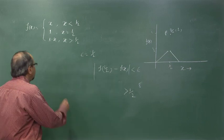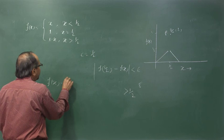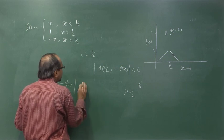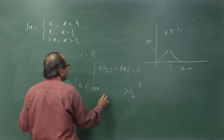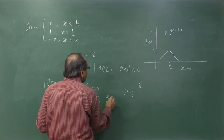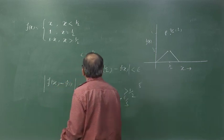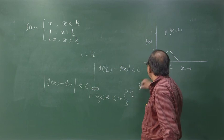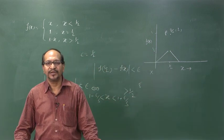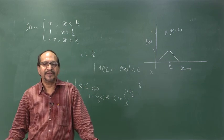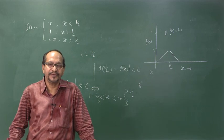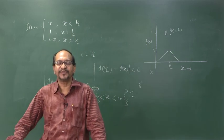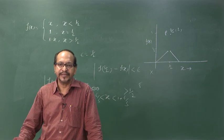We cannot find a positive epsilon for which |f(x) - f(1/2)| < epsilon over any interval (1/2 - delta, 1/2 + delta), because the difference is always greater than 1/2. Contrast this with the earlier example f(x) = 3x + 1, where we found delta = epsilon/3 so that x in (1 - delta, 1 + delta) implied |f(x) - f(1)| < epsilon. That situation does not hold here, so this function is not continuous at x = 1/2. This is the intuitive idea about continuity and discontinuity of a function.